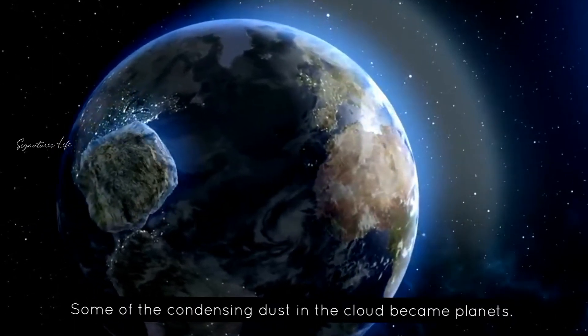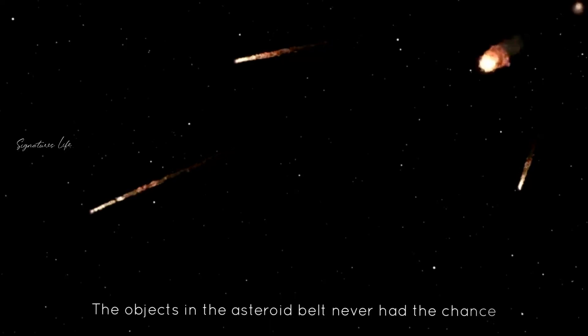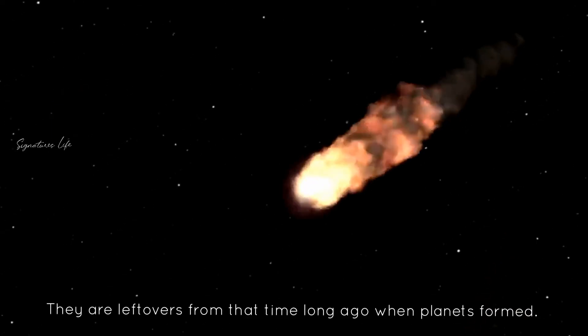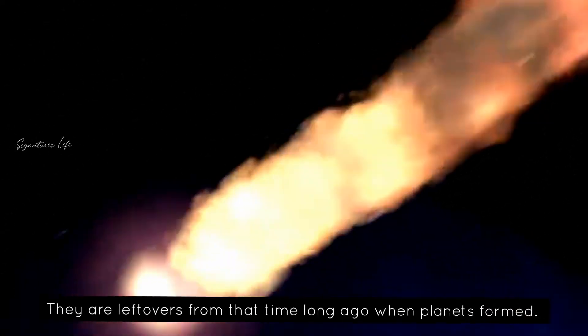Some of the condensed dust in the cloud became planets. The objects in the asteroid belt never had the chance to be incorporated into planets. They are leftovers from that time long ago when planets formed.